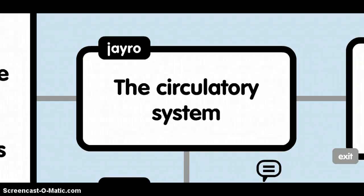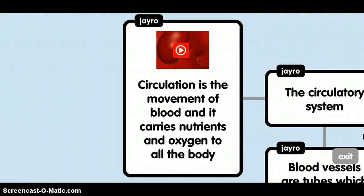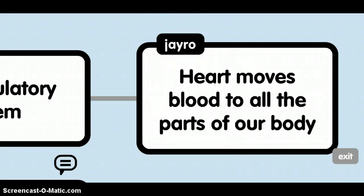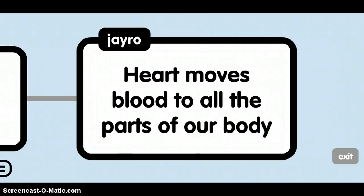The circulatory system. Circulation is the movement of blood, and it carries nutrients and oxygen around the body. The heart moves blood to all the parts of our body.